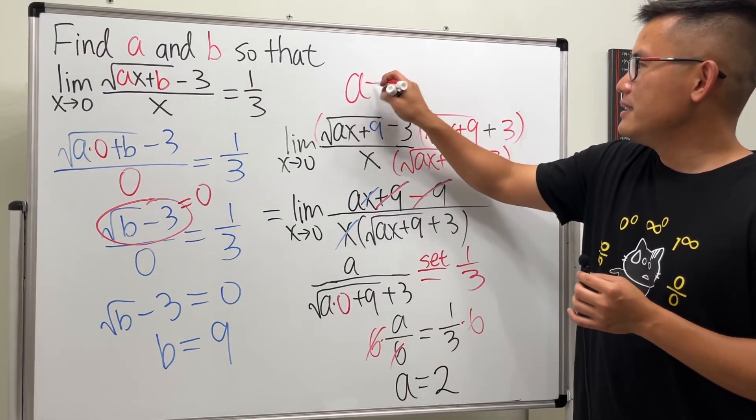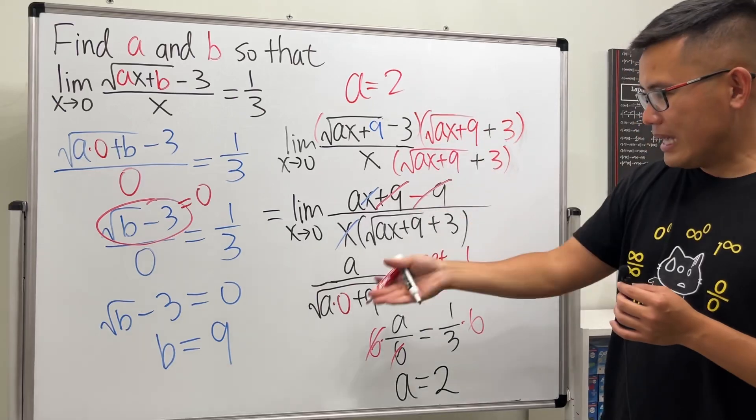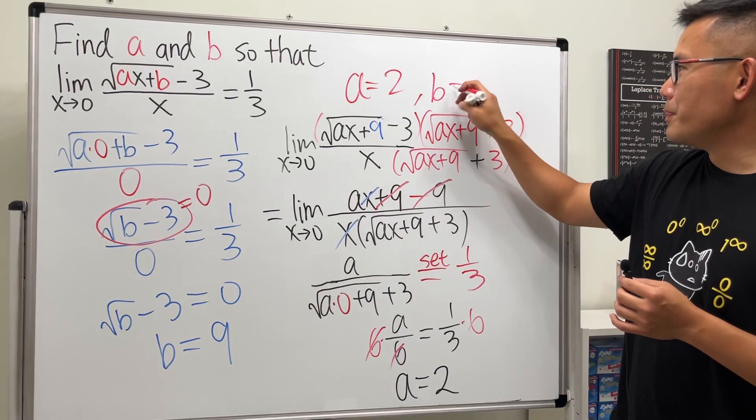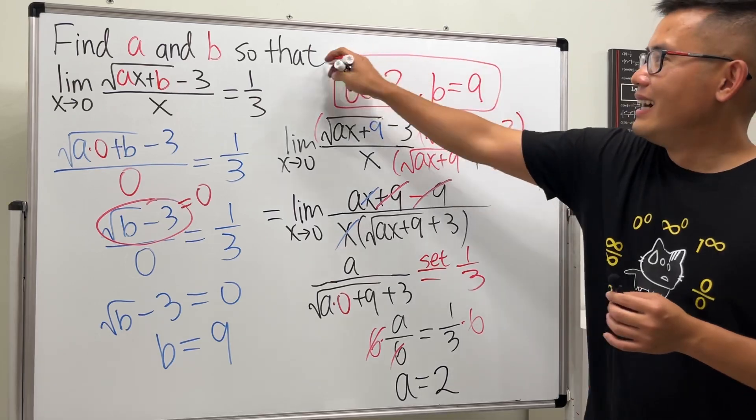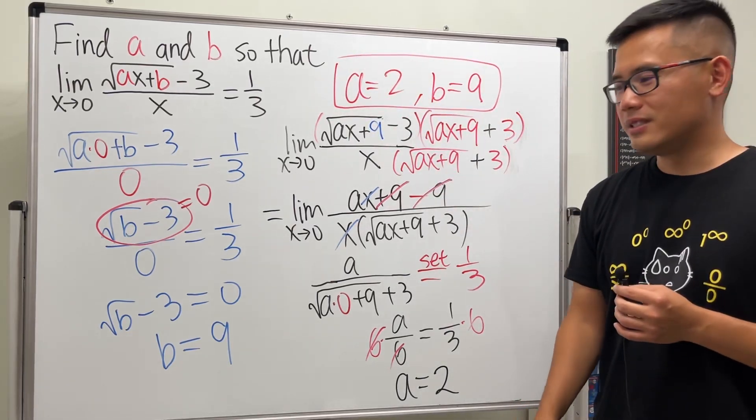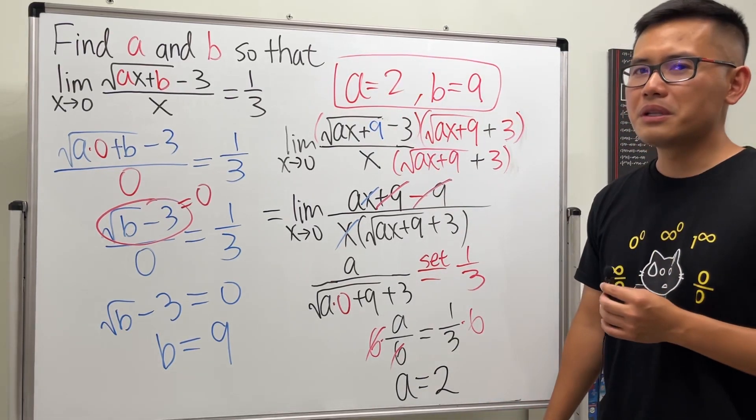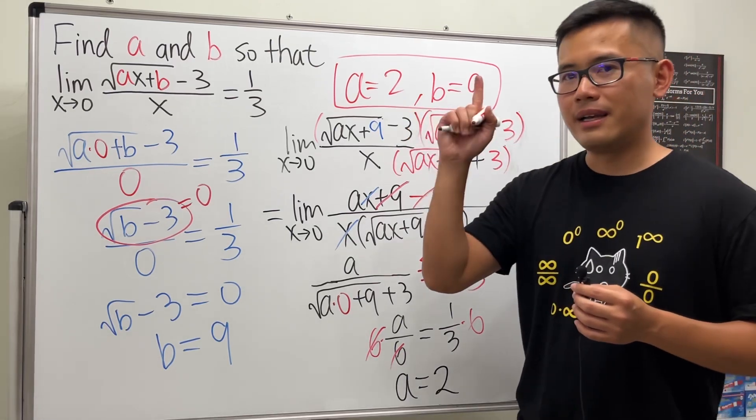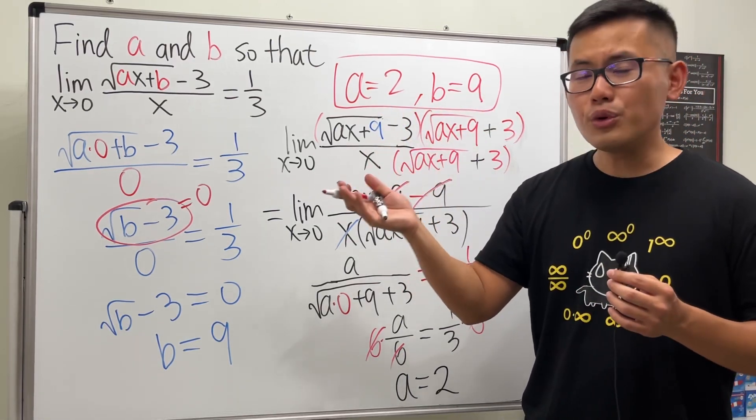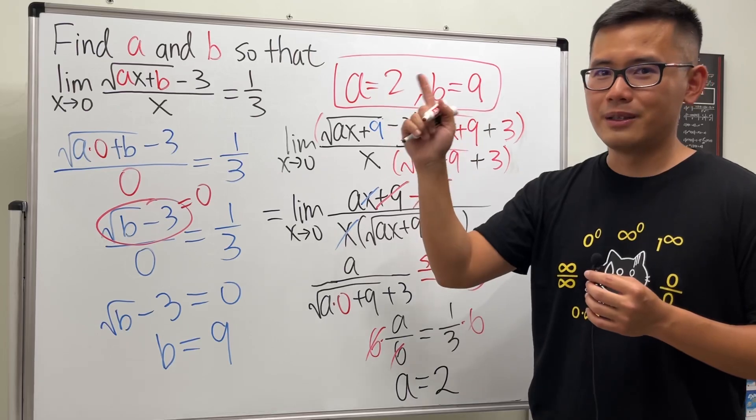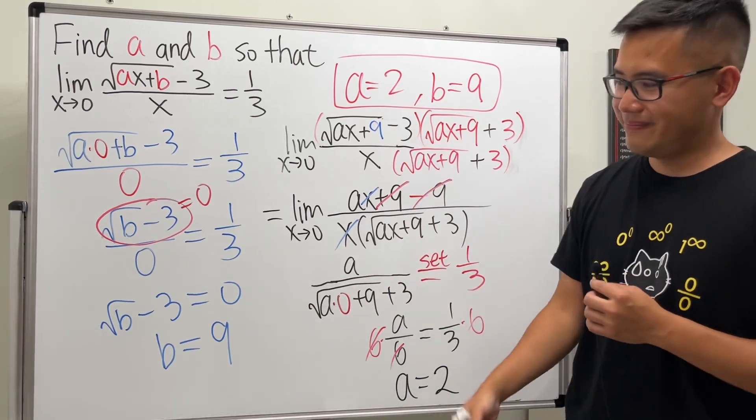So I will just box this for you guys right here. Ladies and gentlemen, a should be two and b should be nine. All right, and let me know if you guys have other ways to do this. And if you guys want to see more calculus videos like this, check out my playlist, or maybe calculus tutorials for your calculus class—also check out my playlist, or subscribe to my channel. That's it.